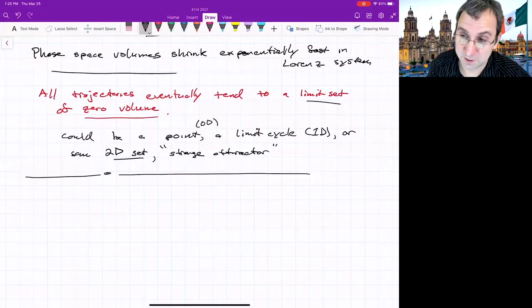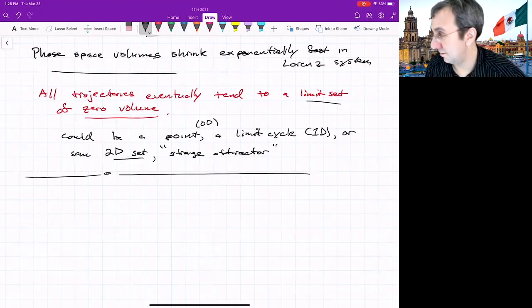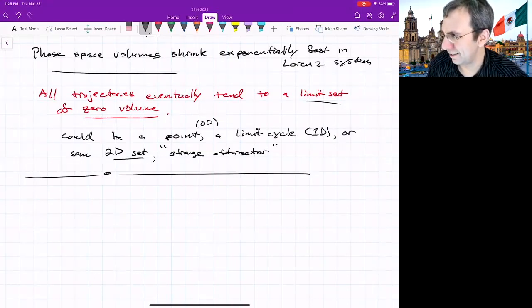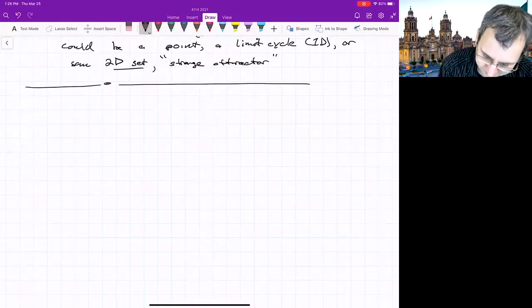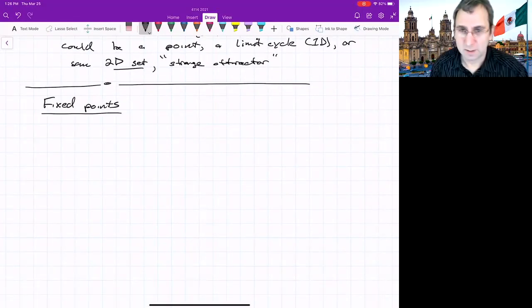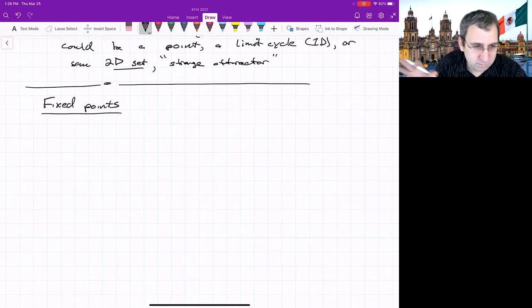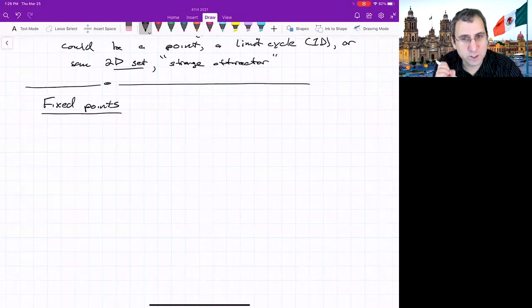So I would have hated to use computers in the 60s. Super frustrating. If you think MATLAB is frustrating, imagine having to wait days and use punch cards or whatever. All right. So let's look at the fixed points. If you look at the equations, there's x, y, and z in all of them. So the origin is a fixed point.